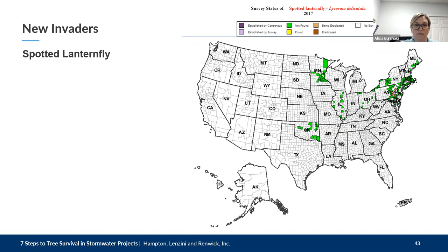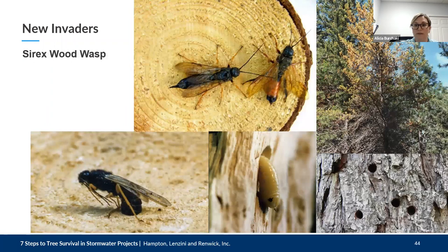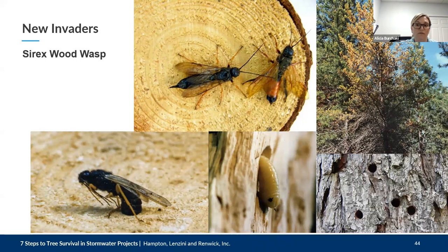The Sirex wood wasp is native to Europe, Asia, and North Africa. Sightings have been noted in Indiana and most notably in New York. The most common method of introduction is on solid wood packaging material, as well as untreated dried logs and saw timber. It attacks a wide variety of pines. The female drills into the wood and inserts a toxic mucus and a fungus along with her eggs. The mucus prevents antifungal toxins from forming, the fungus burrows in the wood causing it to dry out, and the tree dies within a few weeks or months. There are already spots in Michigan, so it's definitely close.